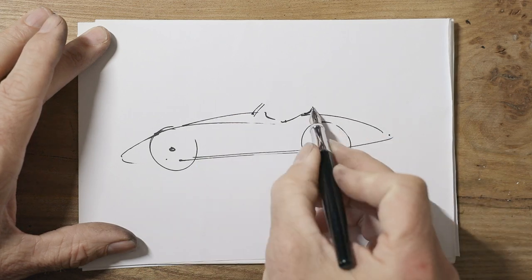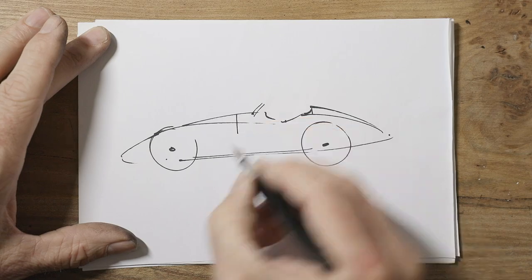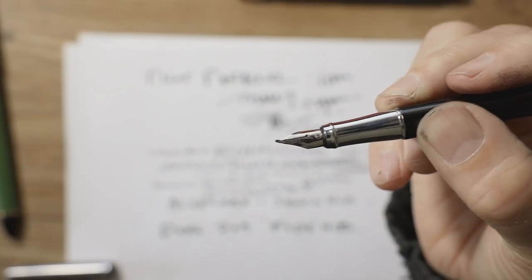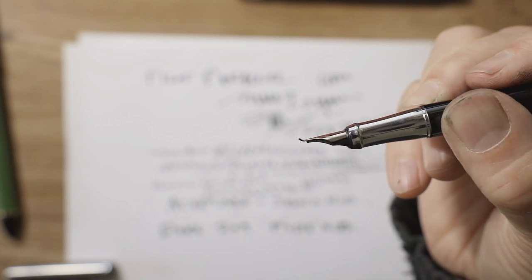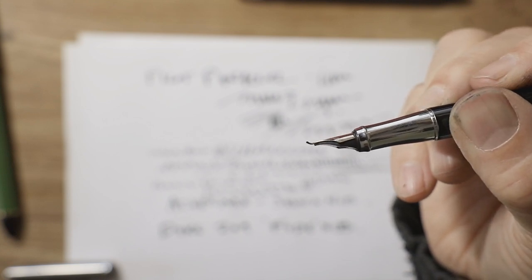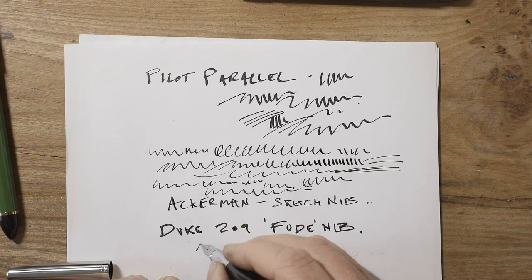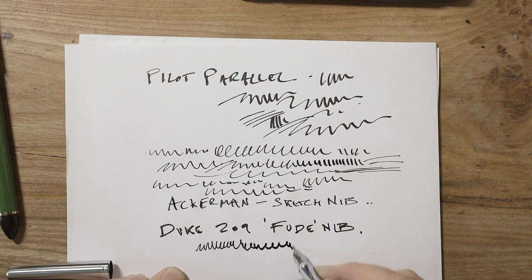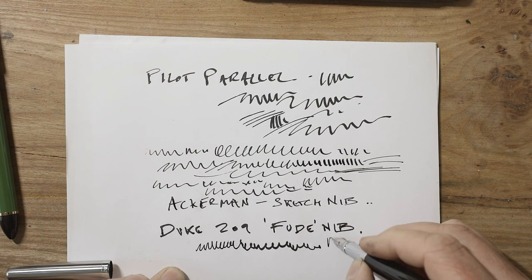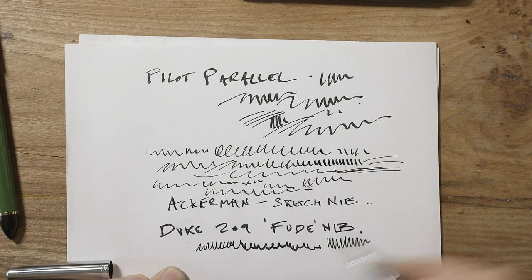A Fude nib, if I can get this close and focus, looks like a normal fountain pen nib until you turn it to the side and you can see it's like it's been dropped on the end. So it's bent over. And that means that as you're drawing, you can get a huge amount of variety of thickness in your line by altering the angle. So if you hold it quite vertically, you get a fine line. If you hold it very shallow, you get a really thick line.